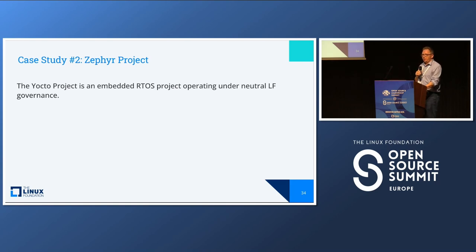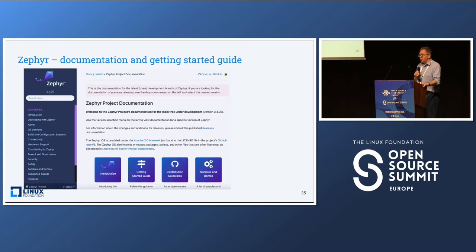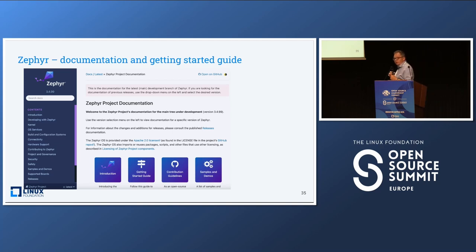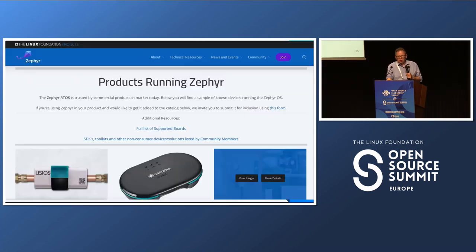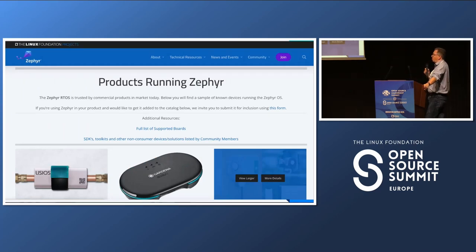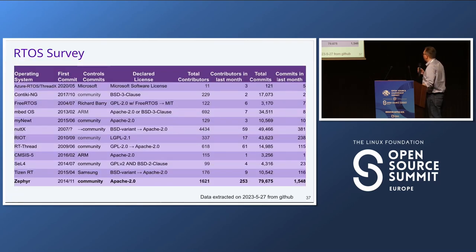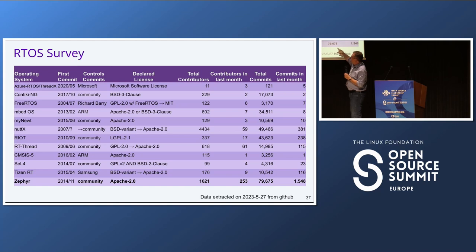Zephyr Project is another embedded project — an RTOS operating system with really good documentation. Here's the documentation site with a Getting Started Guide — making it really easy to start contributing to the project. They have a page on the website about all the products running Zephyr, and as a result you can see how well they're scoring with total commits in a recent overall RTOS survey.